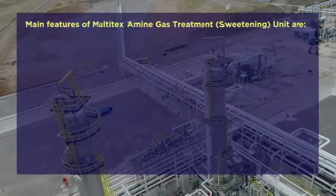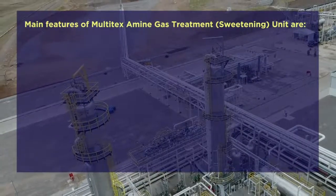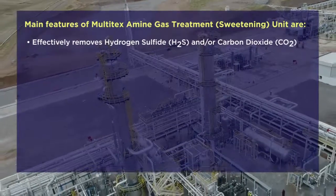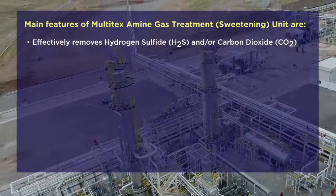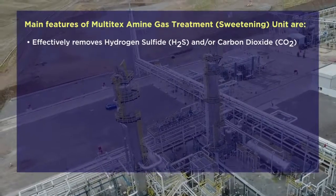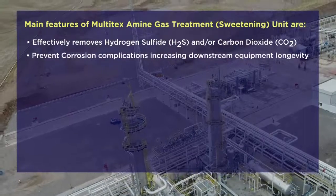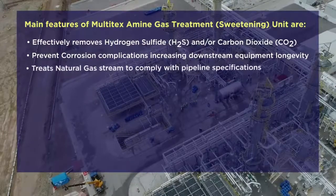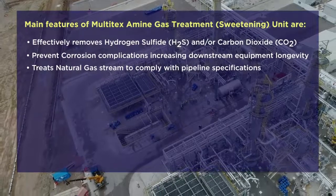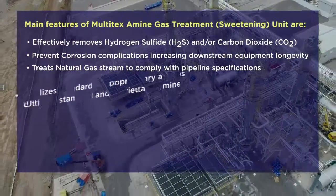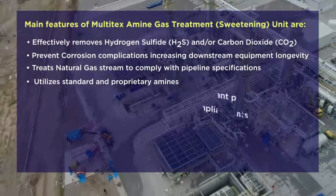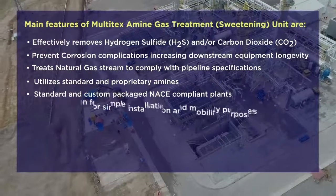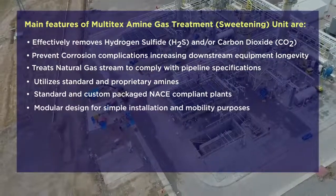The main features of Multi-techs amine gas treatment sweetening unit are: it effectively removes hydrogen sulfide and/or carbon dioxide; prevents corrosion complications, increasing downstream equipment longevity; treats natural gas streams to comply with pipeline specifications; and utilizes standard and proprietary amines with standard and custom package NACE-compliant plants, featuring modular design for simple installation and mobility.